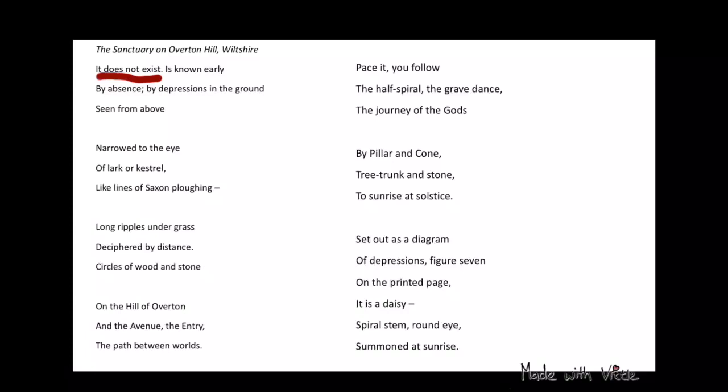Long ripples under grass deciphered by distance. Circles of wood and stone on the hill of Overton and the avenue, the entry, the path between worlds. Pace it, you follow the half spiral, the grave dance, the journey of the gods by pillar and cone, tree trunk and stone, to sunrise at solstice.